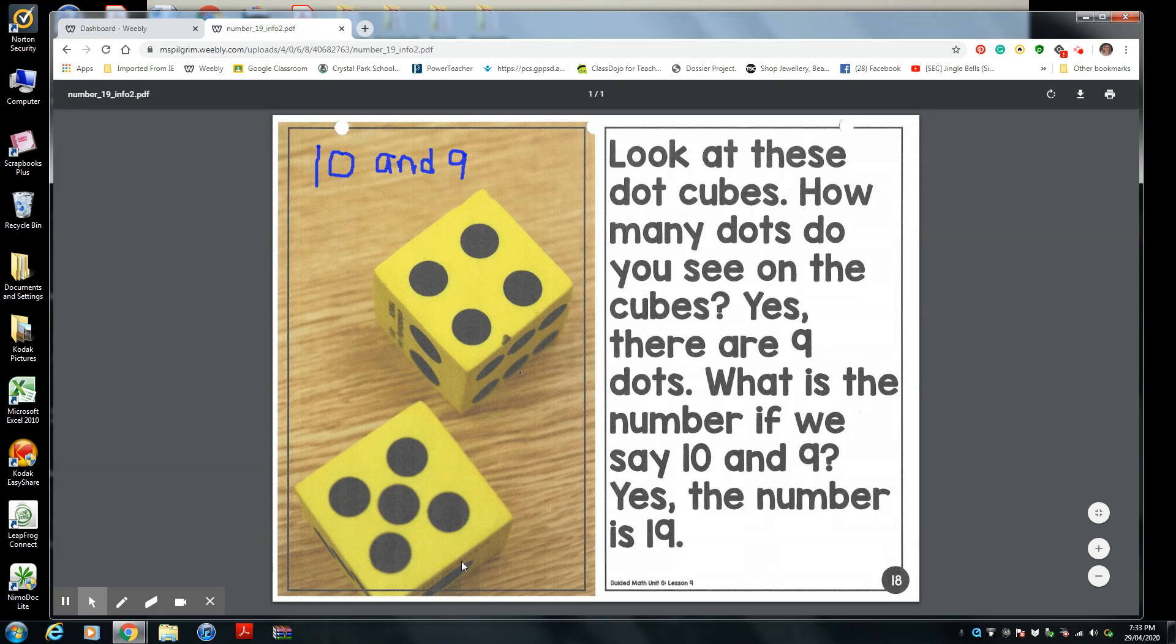Right here, we have, you just told me, nine ones. You said nine dots, which means nine ones. What number would we have if I said there's one group of ten and nine ones? Look at my arrow. Ten and nine is what? What would your answer be?